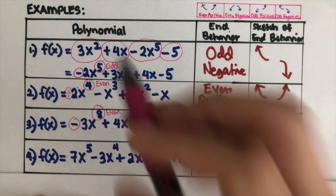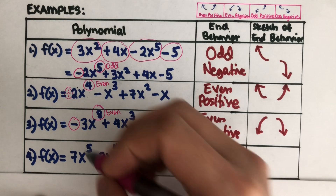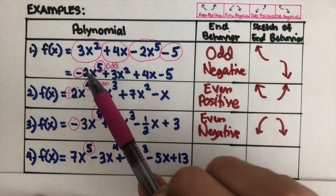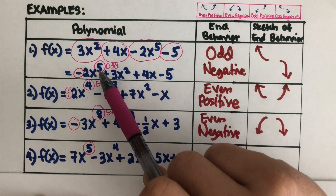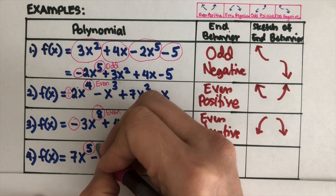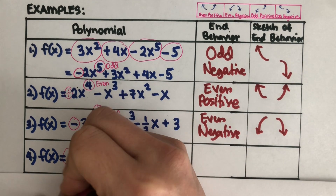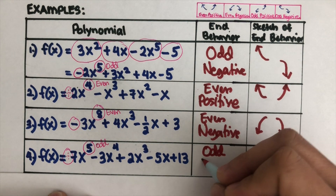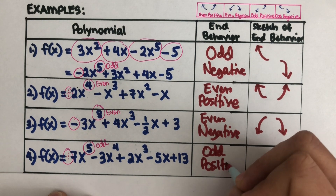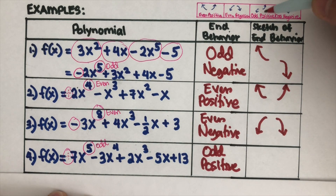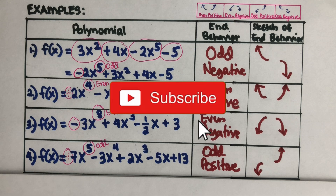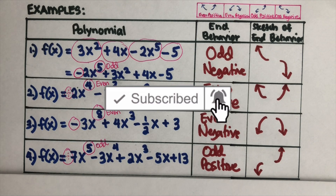For the last example, we look at the highest exponent. By the way, all of these last three were already arranged in descending order, so we didn't need to rearrange them — but the first one was given as an example of how to do that. This last one has an odd highest exponent and an invisible positive leading coefficient, so this is odd positive. Odd positive end behavior goes down on the left and up on the right. If you find this video helpful, please like and subscribe for more math videos!